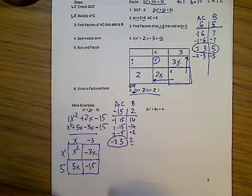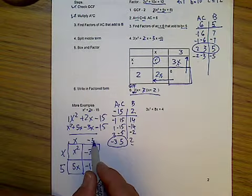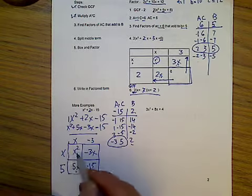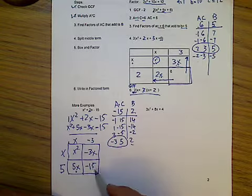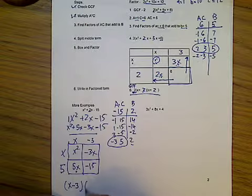Because the greatest common factor between those 2. And I should double check everything. x times negative 3 is negative 3x, x times 5 is 5x, x times x is x². That looks good. 5 times negative 3 is negative 15. So we're all good. So my factors are x - 3 and x + 5.